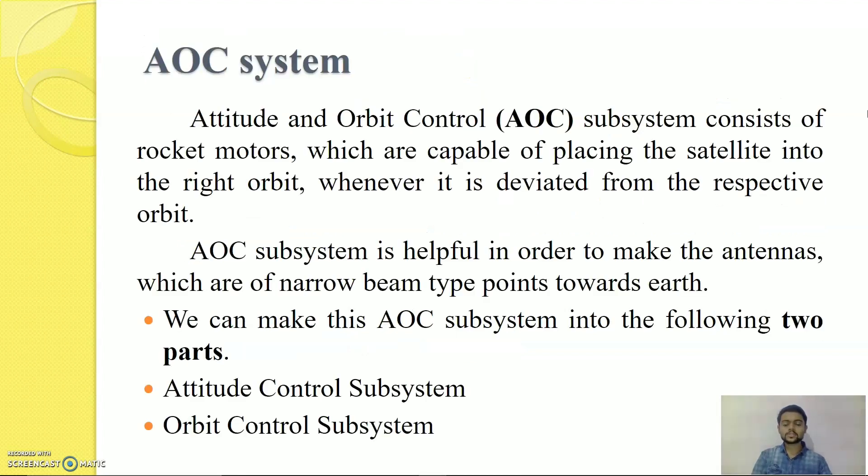Attitude and Orbit Control System, i.e. AOC Subsystem consists of rocket motors which help the deviated satellite to bring in its right orbit. With the help of rocket motors, this AOC Subsystem helps in order to make antennas which are of narrow beam type to point towards the antenna at the Earth Station. AOC Subsystem consists of mainly two parts. First is Attitude Control System and second is Orbit Control System. There are again two methods of Attitude Control Subsystem. First one is spinning the satellite and second one is 3-axis method. We will study them shortly.